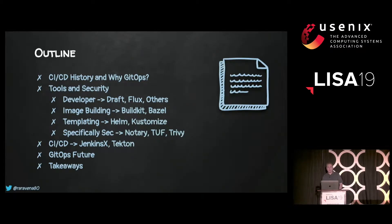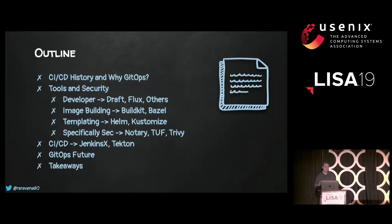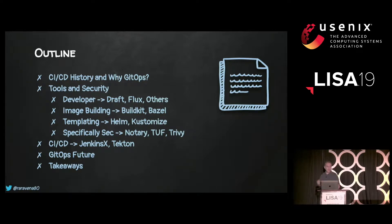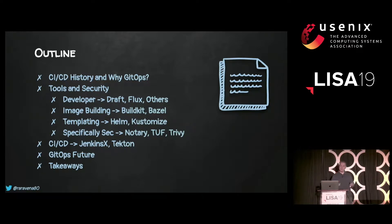Today I'll briefly touch on the history of CI/CD, then talk about why you want something like GitOps, and then cover the tools and security considerations. I've divided these into categories: developer tools like Flux and Draft; container image building tools like BuildKit, Bazel, and Kaniko; templating tools like Helm and Kustomize; security tools like Trivy, Notary, and the Update Framework; and CI/CD pipeline tools like Tekton and Jenkins X. I'll also briefly cover the future of GitOps and CI/CD, and give you some takeaways.